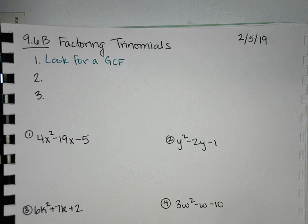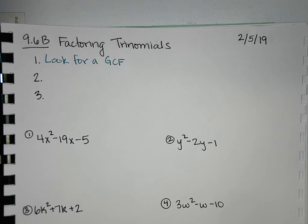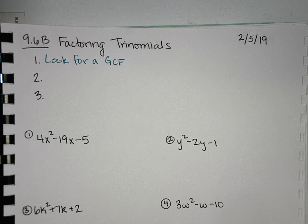No matter what the problem looks like, start by looking for a GCF, because if you can take that out, it'll make your numbers smaller and it'll help you get it correct because it'll help you fully factor. So no matter what the problem, first thing we look for is a GCF.